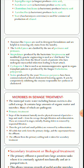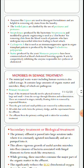Streptokinase, produced by the bacterium Streptococcus and modified by genetic engineering, is used as a clot buster for removing clots from the blood vessels of patients who have undergone myocardial infarction leading to heart attack. Cyclosporin A is used as an immunosuppressant agent in organ transplant patients; it is produced by the fungus Trichoderma polysporum. Statins produced by the yeast Monascus have been commercialized as blood cholesterol-lowering agents, acting as competitive inhibitors of the enzyme responsible for cholesterol synthesis.